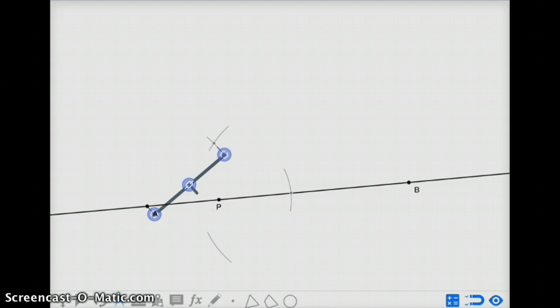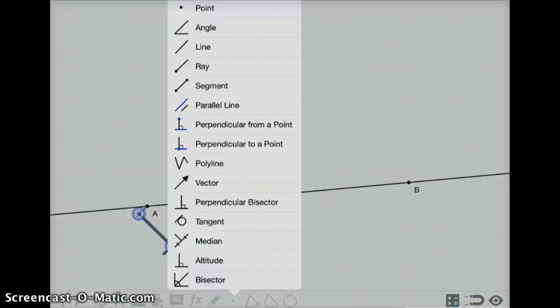And as soon as I do that, the line segment that I create, or the line I create, that passes through either one of those arc intersects and point P, will be perpendicular to it.